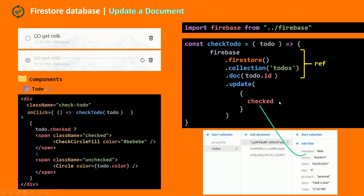Checked is going to be set to the opposite of its current value — not todo.checked. So if it was false it's now going to be true, and if it was true it's now going to be false. Let's go and see this in action.